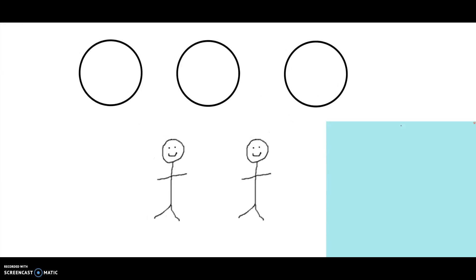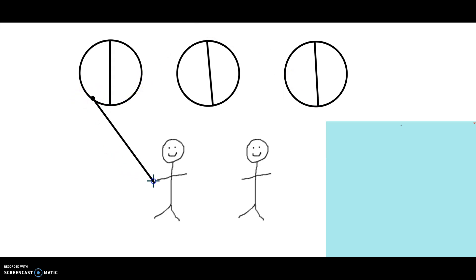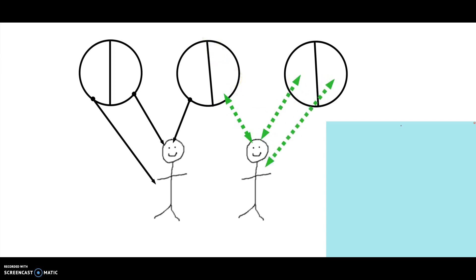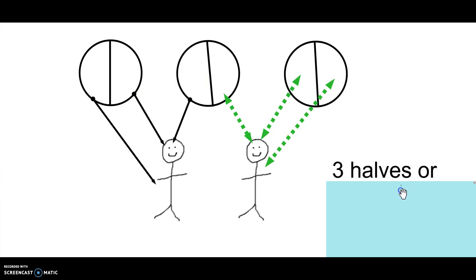Let's look at another way. This time, let's start out by cutting the pizzas in half and sharing the halves with each brother. Give a half a pizza, and another half, and another half, and another half. Now how much did each brother get? Three halves. Written as a fraction, three halves of the pizzas.